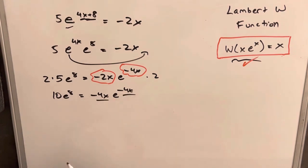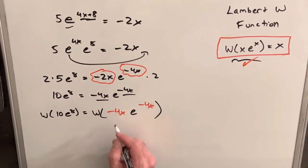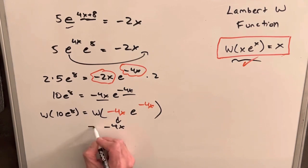And now we have what we need in order to use our Lambert W function. So we'll take Lambert W on both sides. Then from here, we're going to have our minus 4x coming from here, and that's going to equal Lambert W 10 e to the 8.